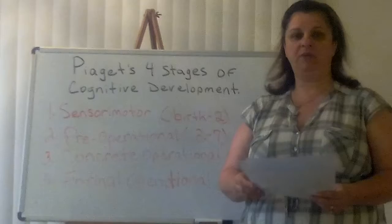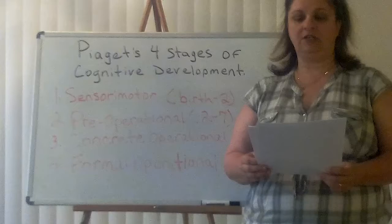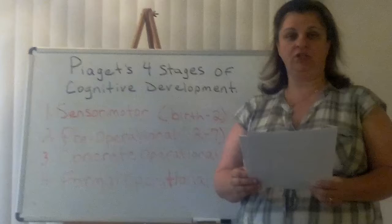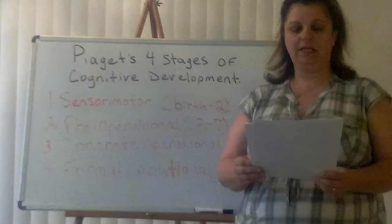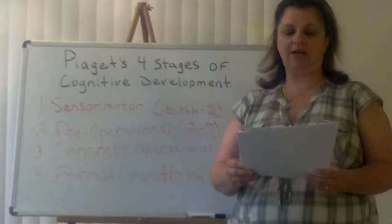Stage two: pre-operational, ages two to seven. The child begins to represent the world with words and images. These words and images reflect increased symbolic thinking and go beyond the connection of sensory information and physical action. The child becomes more verbal and still believes in magic or imaginary friends. During this stage, young children are able to think about things symbolically — the ability to make one thing, a word or an object, stand for something other than itself. Thinking is still egocentric and the child has difficulty taking the viewpoint of others.